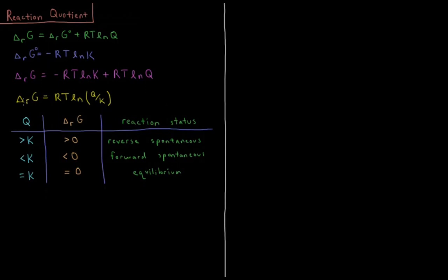Remember that for processes that occur at constant temperature and pressure, the Gibbs energy must be negative or zero in order for a process to be spontaneous — it must be less than or equal to zero during any process that doesn't require an input of energy to occur.